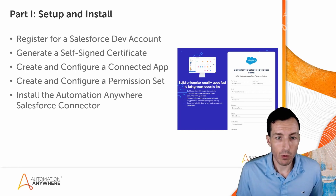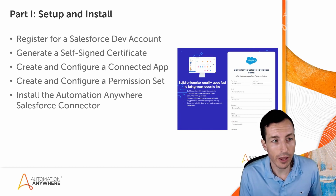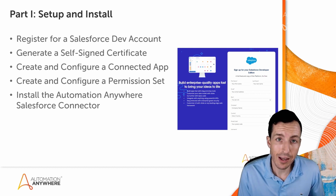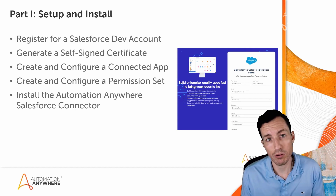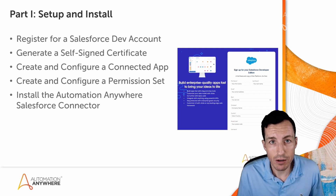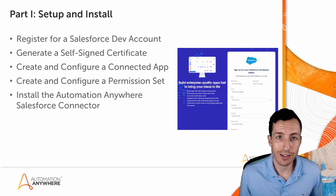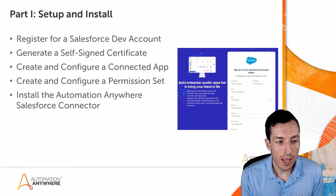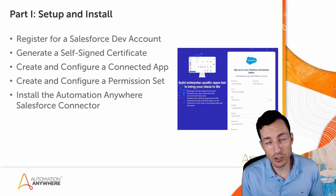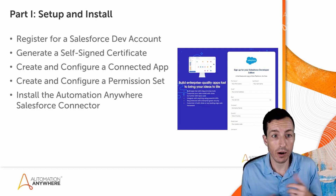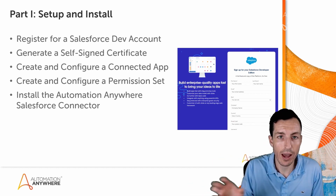For part one — setup and install — we'll first register for a dev account. Salesforce makes that incredibly easy and fast. We'll generate a self-signed certificate needed for the connected app, then create and configure that connected app, covering things like easing IP restrictions and setting up OAuth. We'll also create and configure a permission set to associate users with the connected app, and end by installing the Automation Anywhere Salesforce connector from AppExchange. There's a freemium model — you get three bot configurations to start.